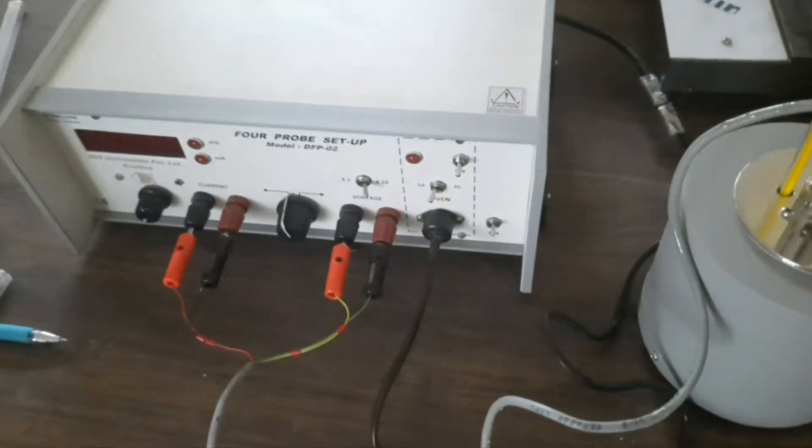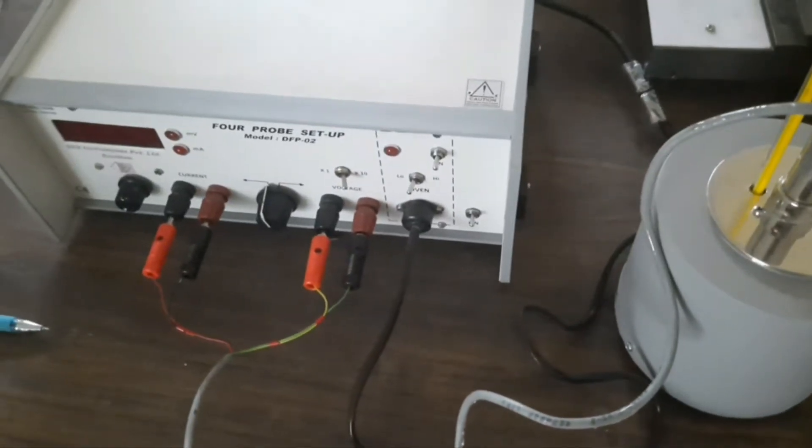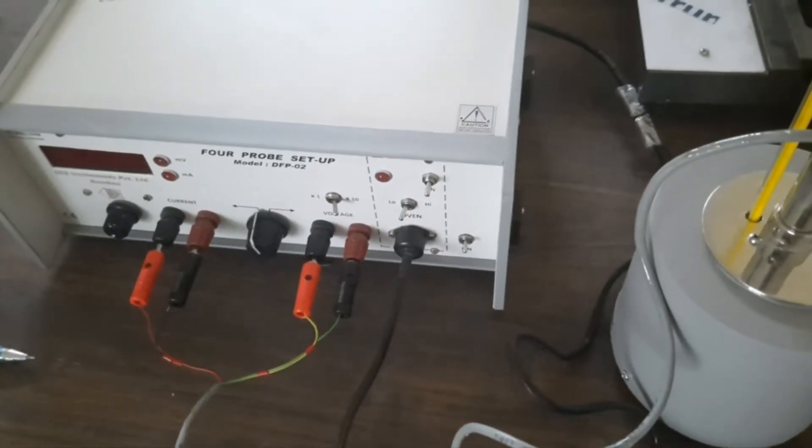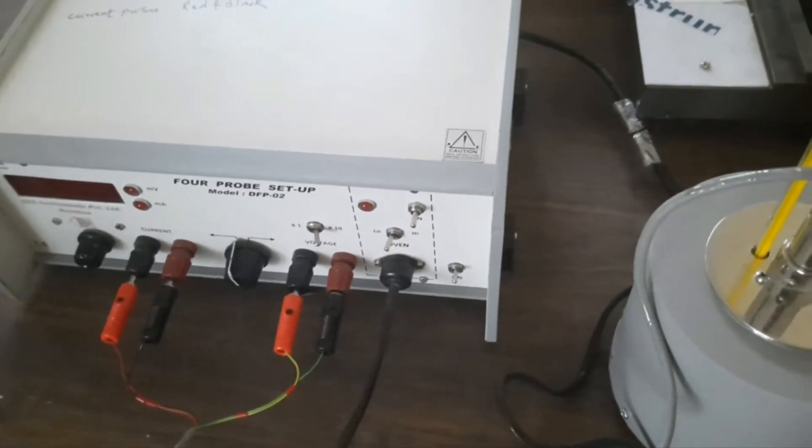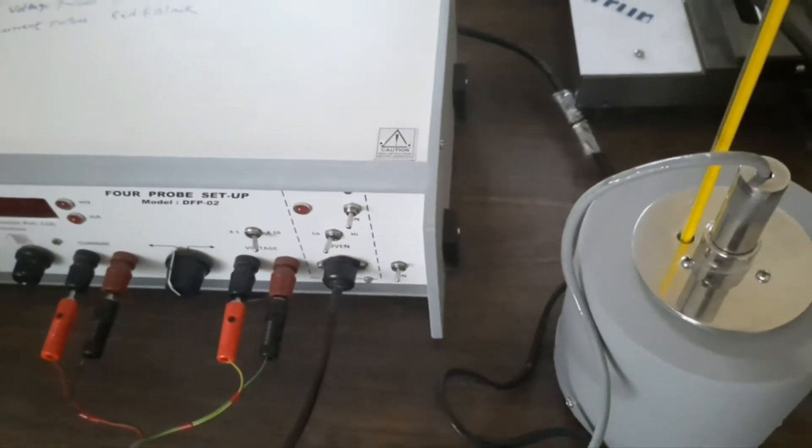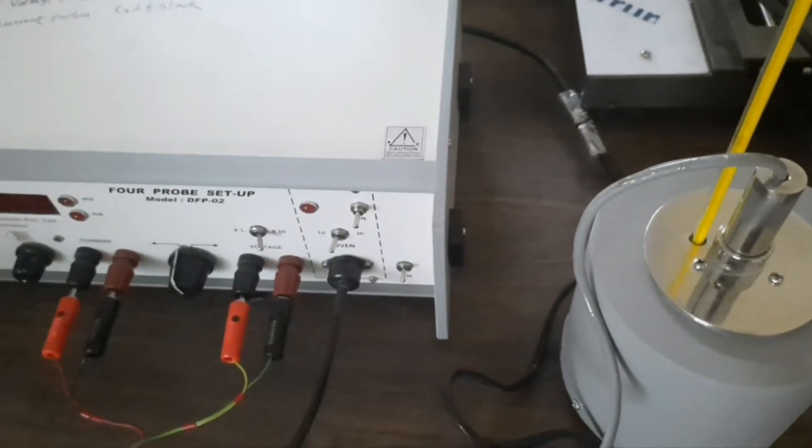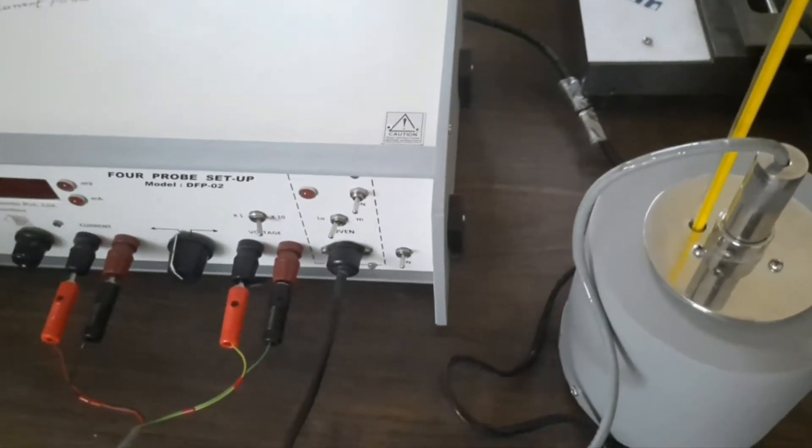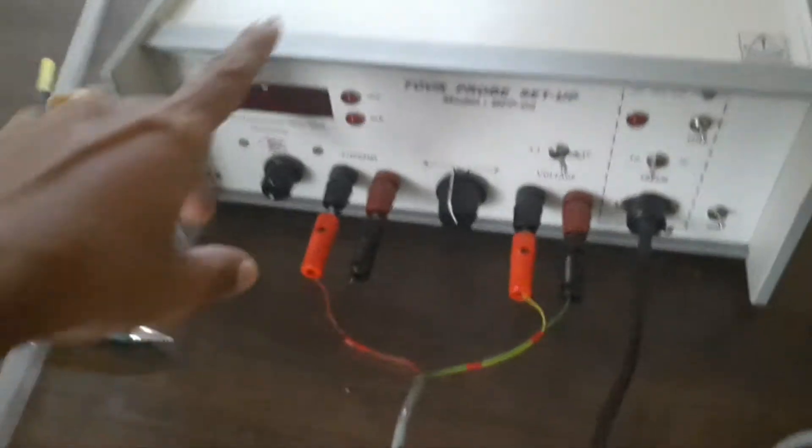This is the experimental setup for the 4-probe method. In this experiment we have to measure the resistivity of the semiconductor using germanium crystal with temperature by the 4-probe method, and also we have to find out the energy band gap of the given crystal.